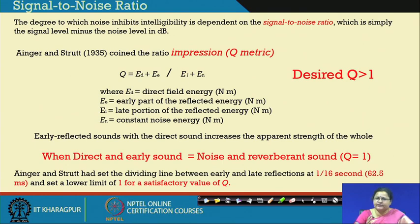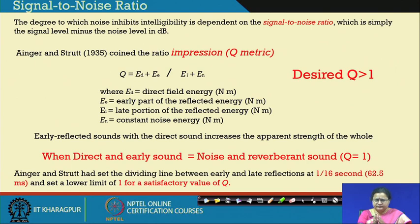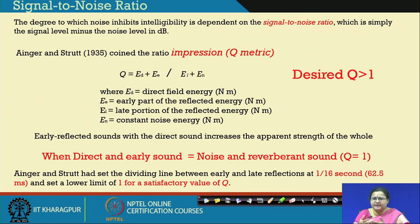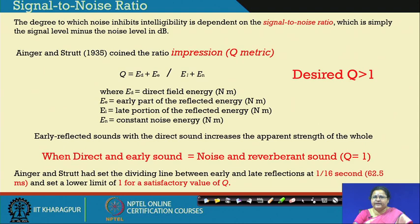To find the late portion of reflected energy, you need the time threshold stated by the precedence effect — 25 milliseconds for speech. Enger and Strutt defined 1/16 second, that is 62.5 milliseconds, as the maximum that can be accounted in the early part of reflected energy. The remaining late reflection creates reverberation time, which is actually noise to the next syllable spoken in speech. The minimum satisfactory value of Q desired is 1 when signal equals noise; otherwise we always expect Q to be of the order of 2, 3, or 4, so we get strong signal and very little noise.